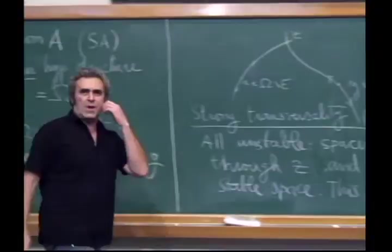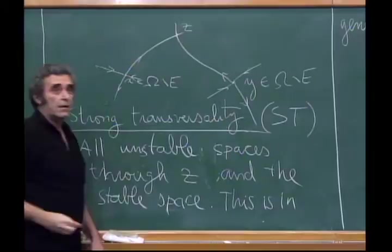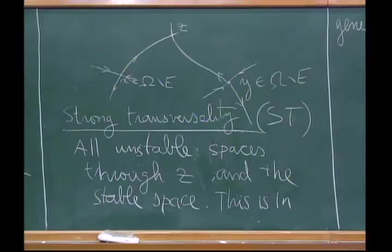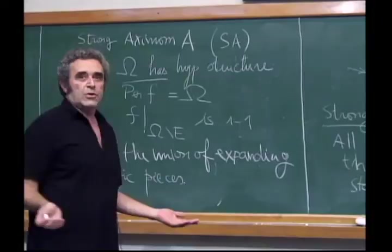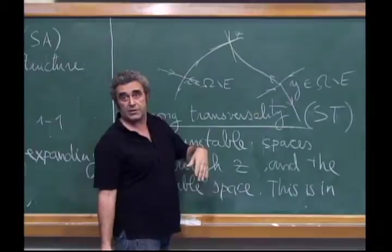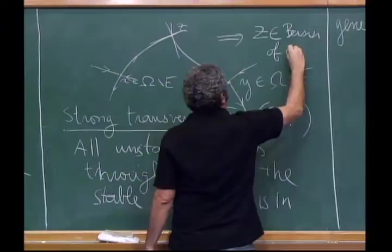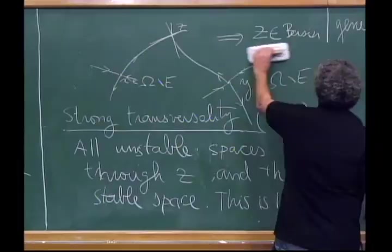To give an example in dimension two: suppose you have a stable manifold and an unstable manifold — say saddle-type fixed points. You have one unstable manifold, another unstable manifold, and a stable manifold passing through z. The only possibility for three subspaces in dimension two to be in general position is that the stable space of z is two-dimensional — it's a plane. This implies in dimension two that z belongs to the basin of an attracting periodic point.